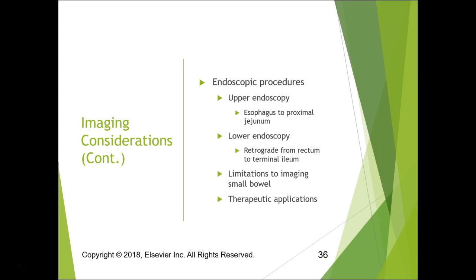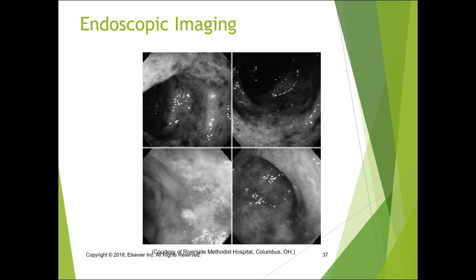For endoscopic procedures, we put a scope down upper and lower GI. Upper endoscopy looks at ulcers of the esophagus, stomach, and duodenum; colonoscopy goes rectally. Biopsies can be taken during these procedures. We also do MRCP and ERCP, going through the sphincter of Oddi to look at the common bile ducts. MRCP can be done without the scope, which is really nice.